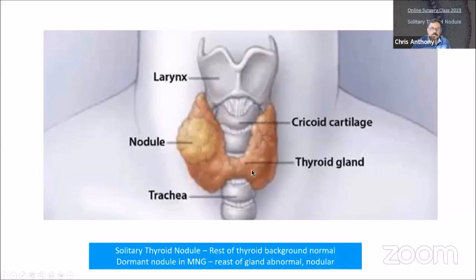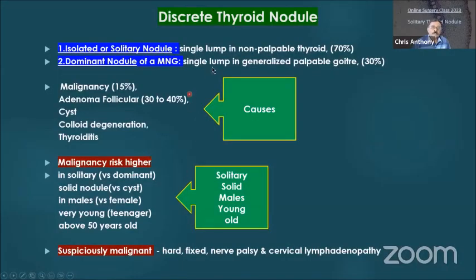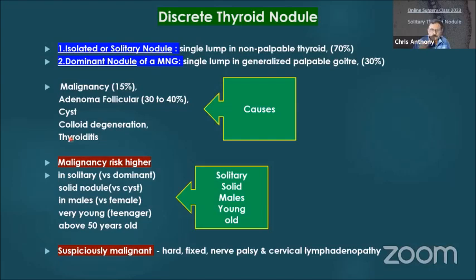The location of the thyroid is very important. A solitary nodule has the rest of the gland normal. If it is a dominant nodule in a multinodular goiter, then the rest of the gland will also be abnormal — it will be enlarged, and microscopically there will be multiple nodules. Isolated nodules can be a single lump or a dominant nodule. Common causes include malignancy in about 10–15% of cases, follicular adenomas in about one-third of patients, a degenerative cyst of a multinodular goiter (colloid degeneration), or inflammation such as viral thyroiditis or, more commonly, autoimmune thyroiditis.